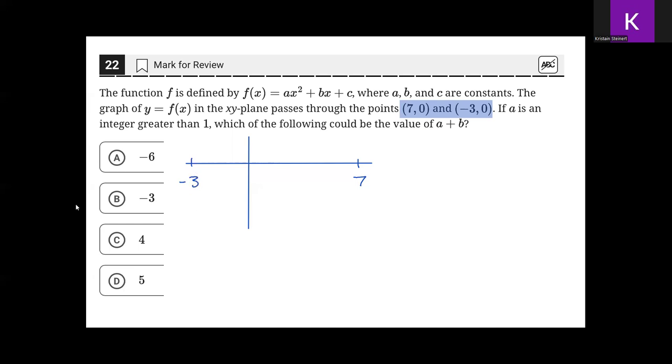This is beneficial because the vertex of a quadratic function, which this is because it's an x² function, the vertex is always halfway between the solutions because the vertex is where the axis of symmetry is. That means the number halfway between 7 and -3 is 2, so the vertex will be somewhere on the line x = 2.